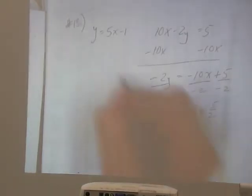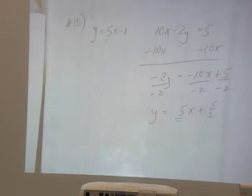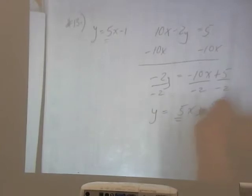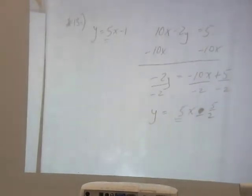So they have the same slope. Oh, minus, thank you. They have the same slope, but they have different y-intercepts. So what can we say about those two lines? Parallel. They're parallel. So how many times do they attach? Zero. Zero. So zero solutions.